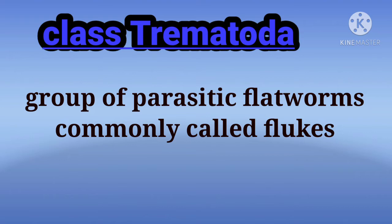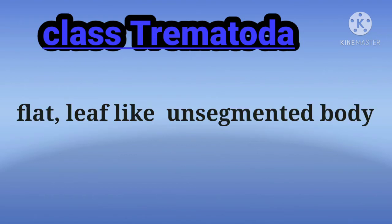Class Trematoda is commonly known as flukes. They are a group of parasitic flatworms. Their body is flat, leaf-like, and unsegmented.